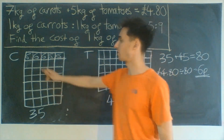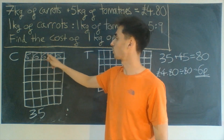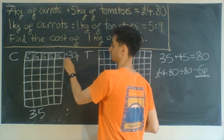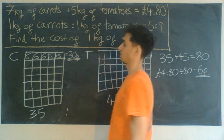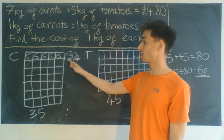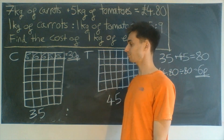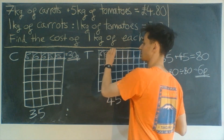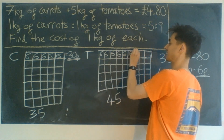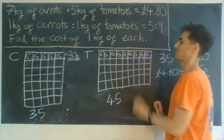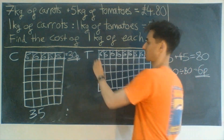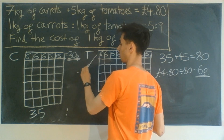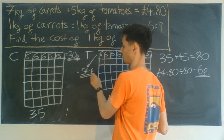Thinking back to the start, we knew that one row was the price of one kilogram of carrots and one row here was the price of one kilogram of tomatoes. So let's fill in our arrays with the new knowledge that each square is 6 pence. Our original 5 boxes represent 30p — that tells us that one kilogram of carrots is worth 30p. And then doing the same thing for tomatoes: we've got 9 lots of 6 pence, which tells us that one kilogram of tomatoes is 54 pence.